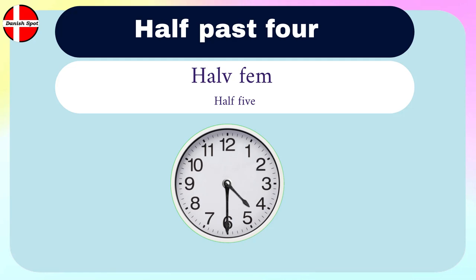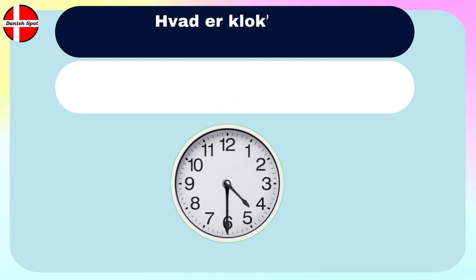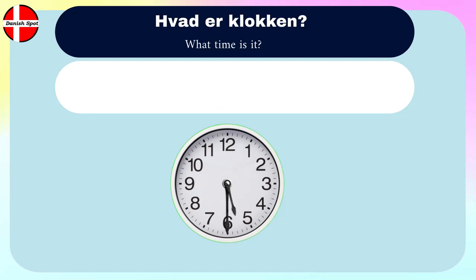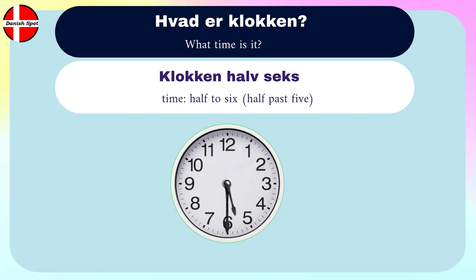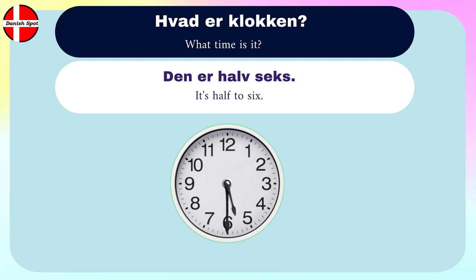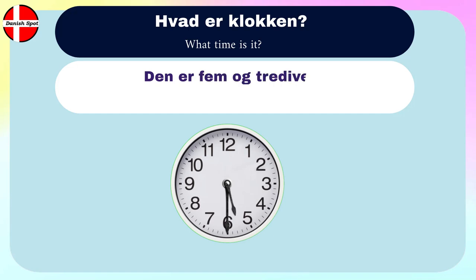Listen to this example. Hvad er klokken? — What time is it? Klokken halv seks. Or: Den er halv seks. The other way to say that is: den er fem og tredive.